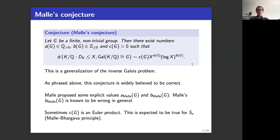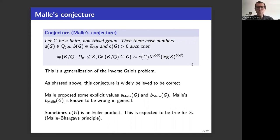Even B_G is currently mysterious, and C_G is in some sense even more mysterious. Sometimes C_G is an Euler product — we don't know exactly when or under what conditions the leading constant should be an Euler product. When it is an Euler product, we expect it to be a product of local densities. At least for S_N extensions, the leading constant is expected to be an Euler product; this is the Manin-Batyrev principle.